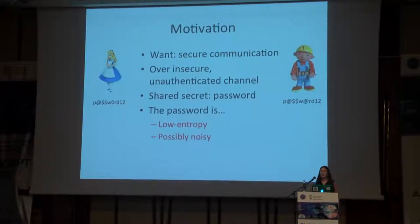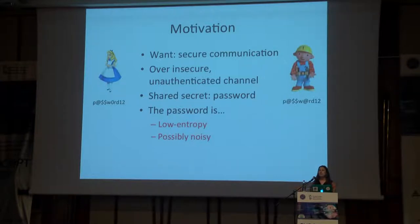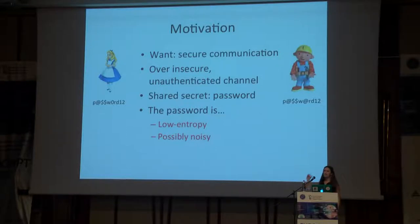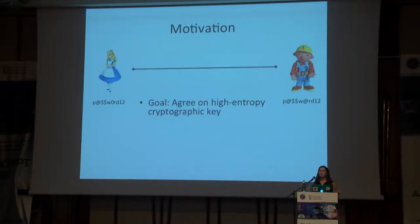Their password also has a second problem, which is that it's kind of noisy. So where Alice has one value, Bob has an approximate version. Despite these two difficulties, the two of them want to leverage their shared password to agree on a high-entropy session key.